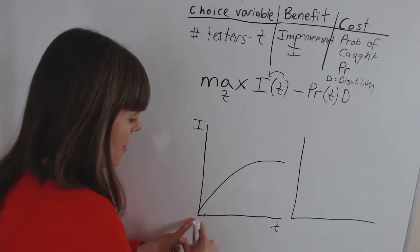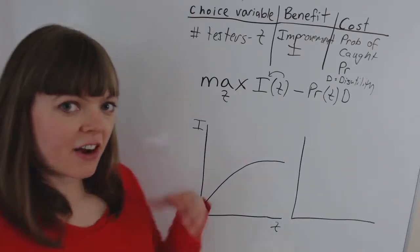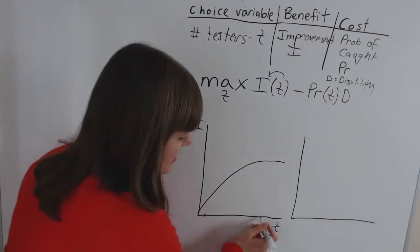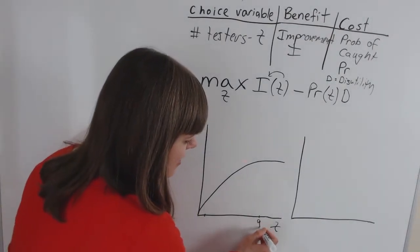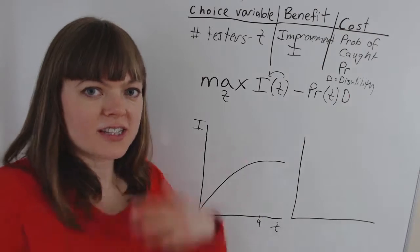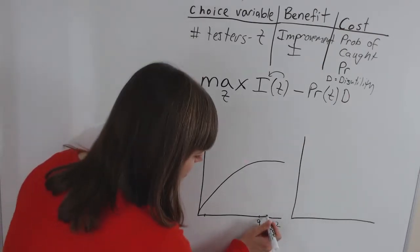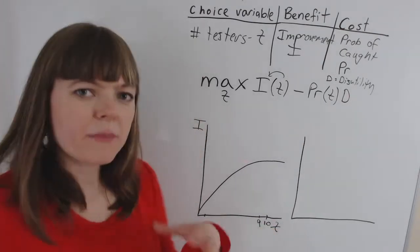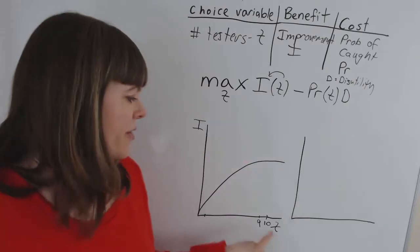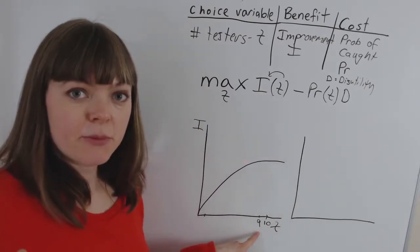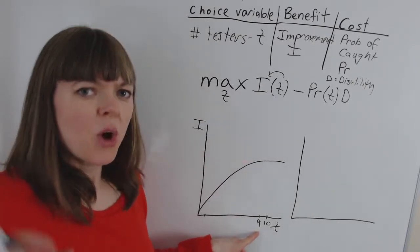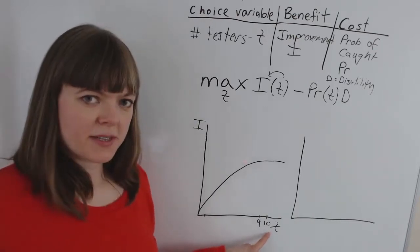So do we get a higher marginal benefit from testing it on the first person compared to testing it on the tenth person if we've got nine testers that we've already tested the product on and we add a tenth tester? Yeah, we probably already know most of what we need to know about the effect of the puking pasties based on the ninth person. We'll get a little bit of extra information from the tenth person.